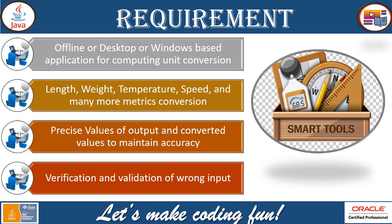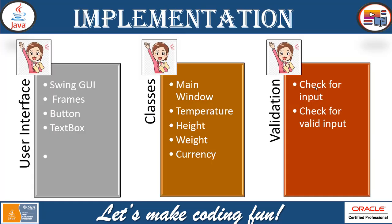When it comes to implementation, there will be three parts. First, you will see the user interface — the frames, the windows, the buttons, text boxes — and every user interface component was designed and implemented using Swing Graphical User Interface API. We are going to create a frame. It's a very simple and basic Swing-based unit converter application which will have frames, buttons, and text boxes.